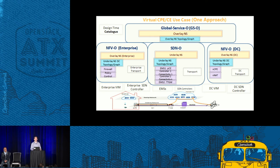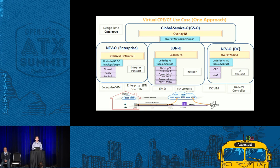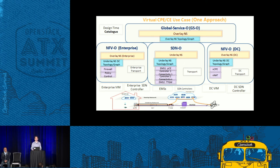Next, we need to set up the service in the enterprise. We use the NFVO component, which is responsible for the overlay service inside the enterprise. It has the topology for the enterprise, the forwarding graph, and also sets up the firewall and policy control VNFs. Then also in the data center, we set up yet another topology map and forwarding graph, and maintain the vCPE and vNAT functions with the appropriate service chaining. The Global Service Orchestrator — the GSO — stitches together all the different components to make one end-to-end service.